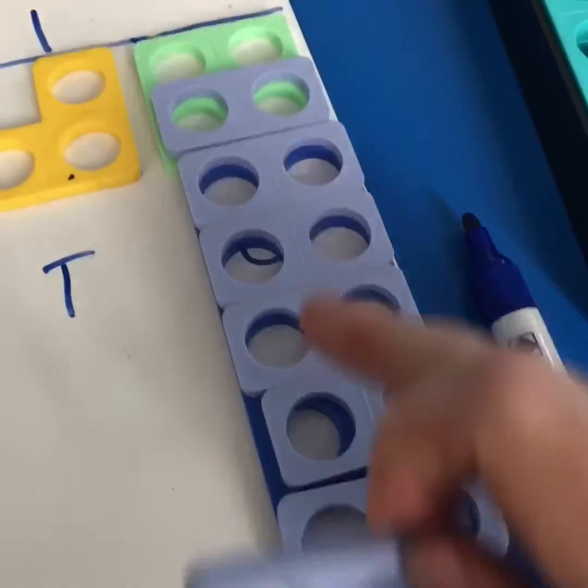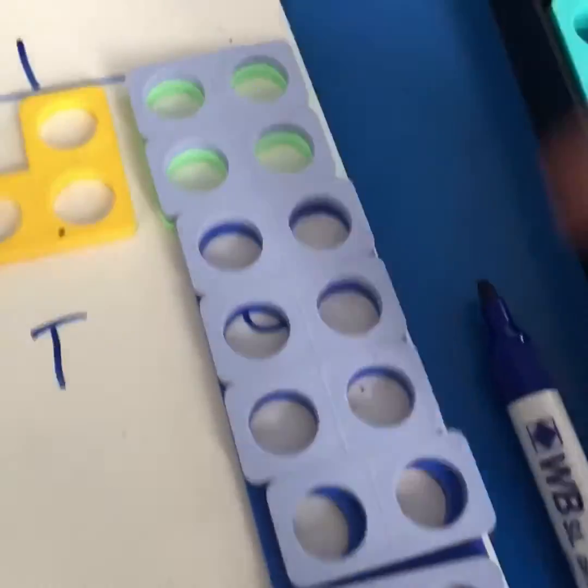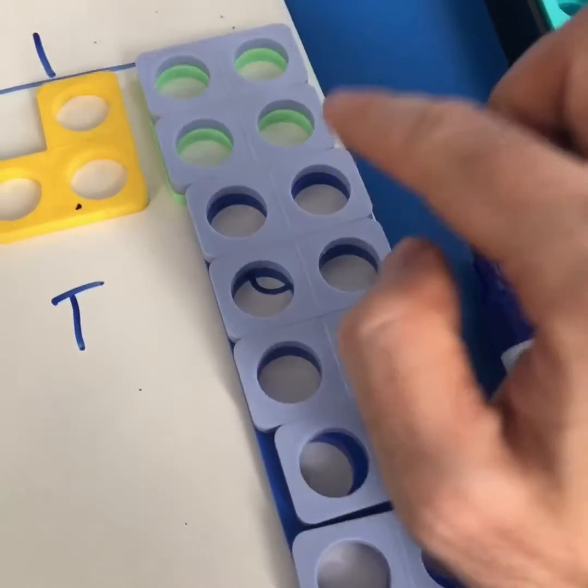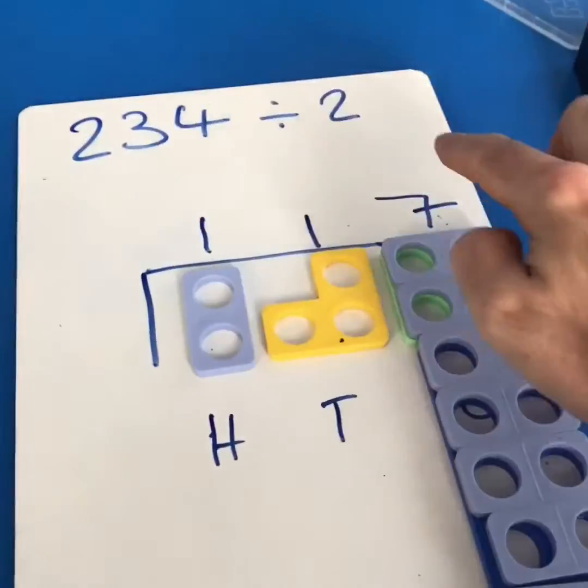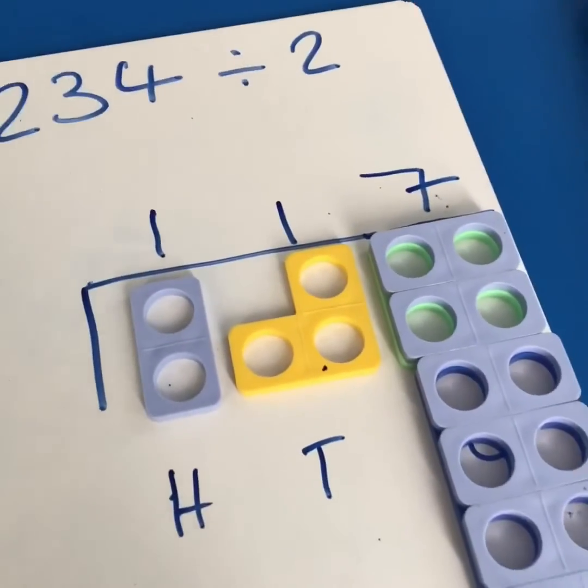And then we think how many twos can fit into 14. That goes one, two, three, four, five, six, seven. So 234 divided by two is 117.